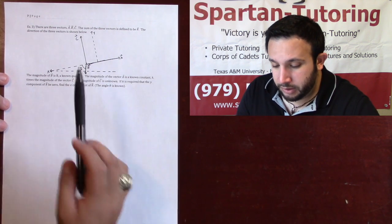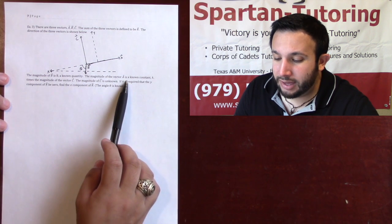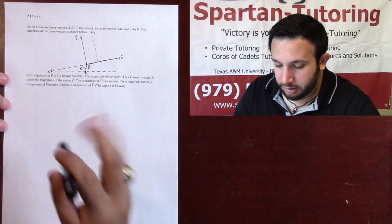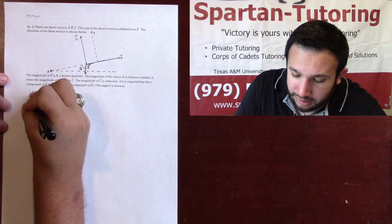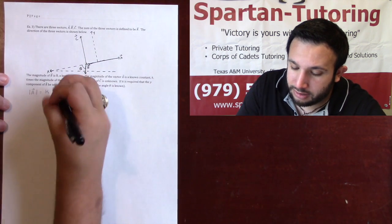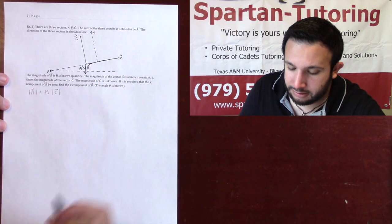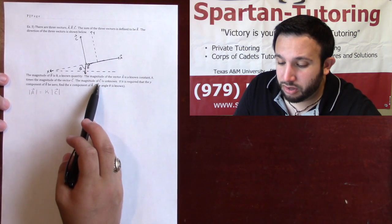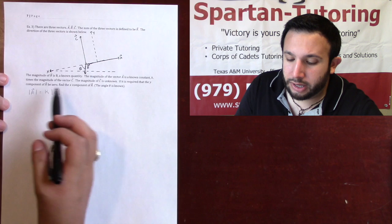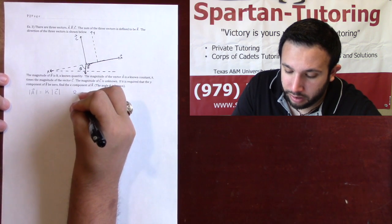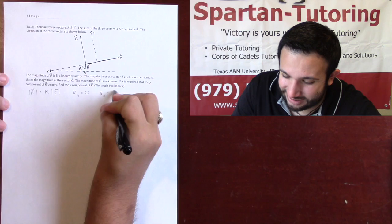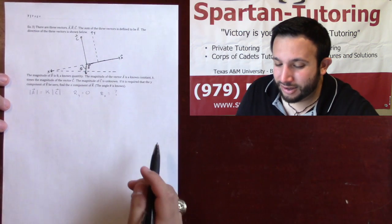Not only is the axis kind of crazy, let's keep reading. The magnitude of B is b, a known quantity. The magnitude of vector A is a known constant k times the magnitude of vector C. So the magnitude of A equals k times the magnitude of C. The magnitude of C is unknown. It is required that the y-component of R be zero, so Ry = 0. Find the x-component of R. The angle theta is known.